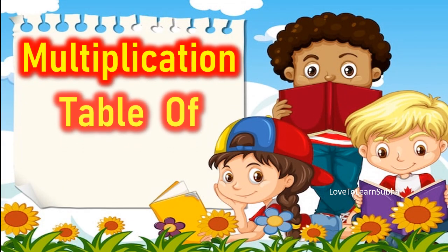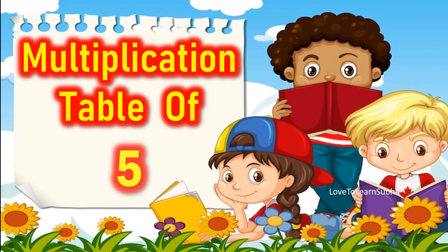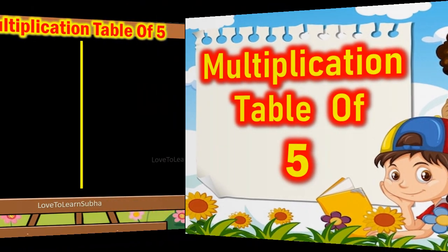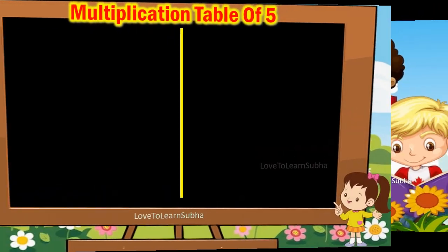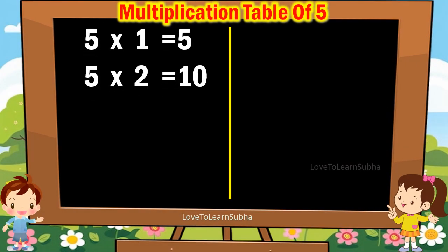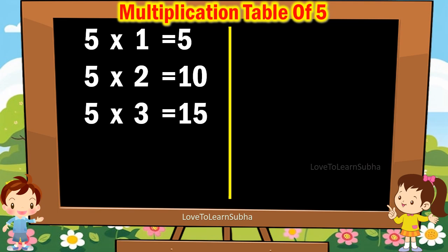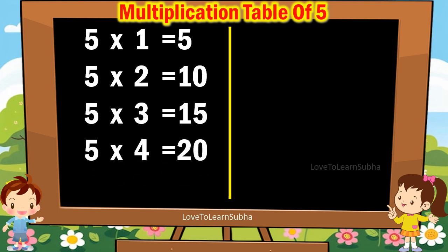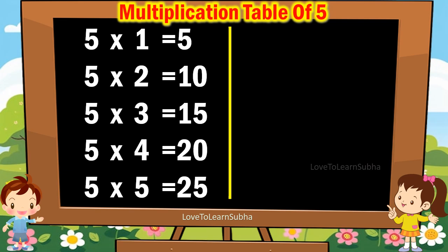Multiplication table of 5. 5 1s are 5, 5 2s are 10, 5 3s are 15, 5 4s are 20, 5 5s are 25.